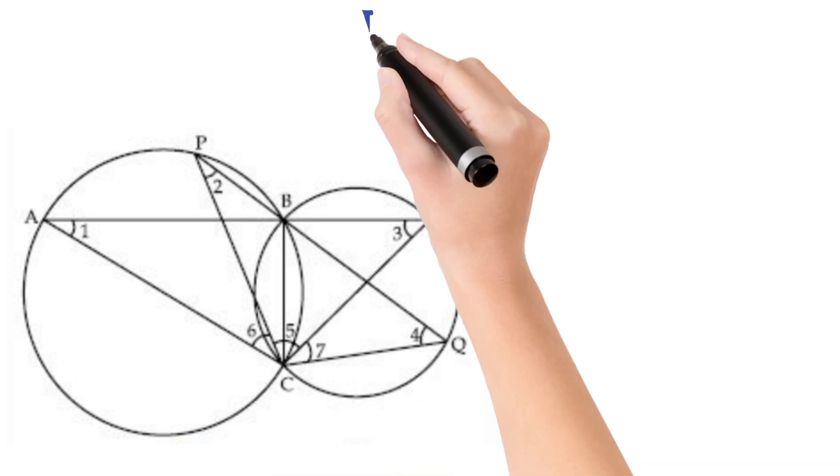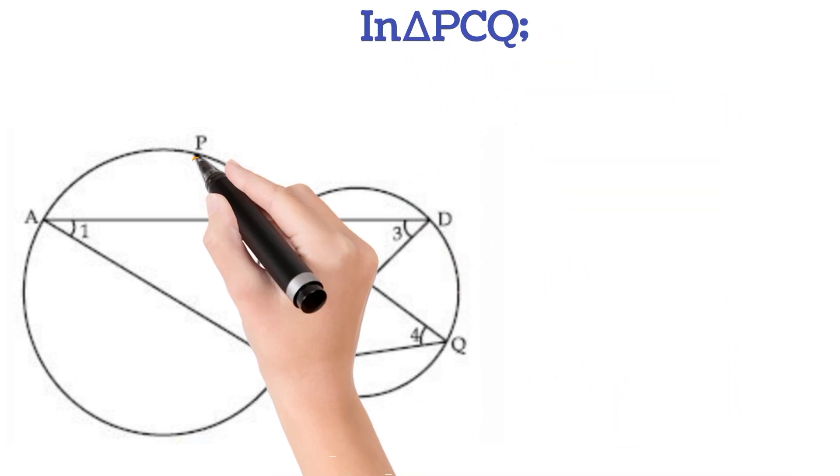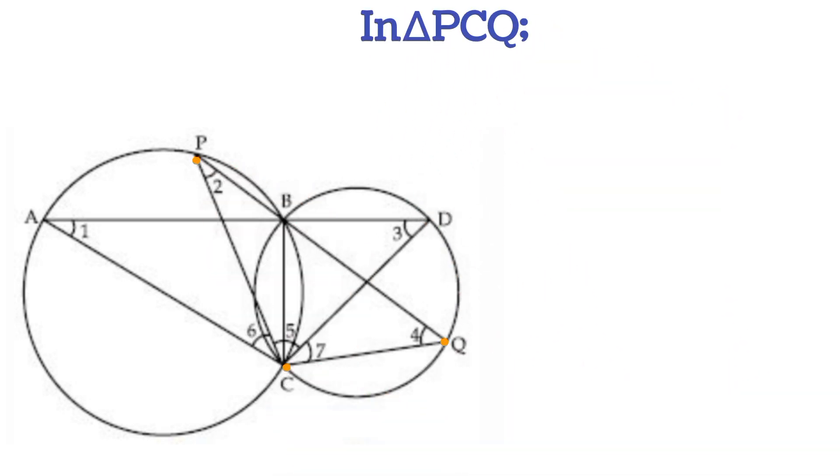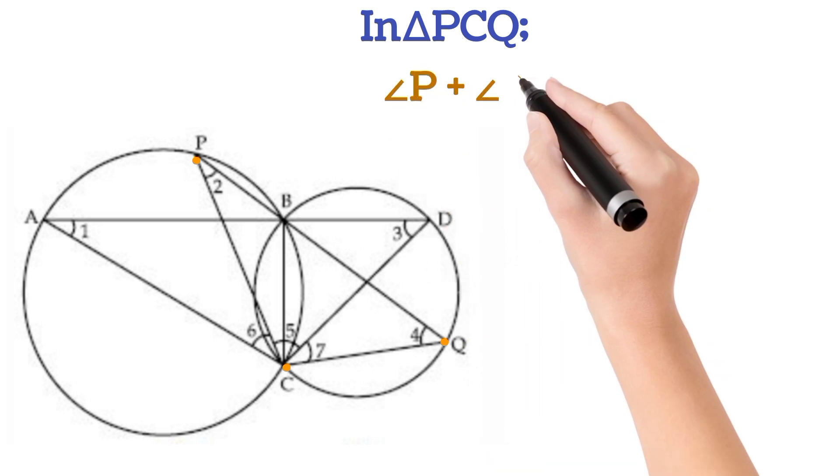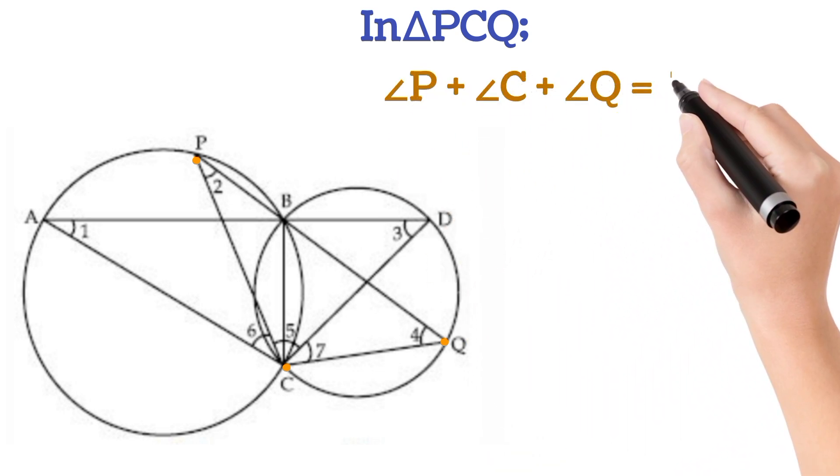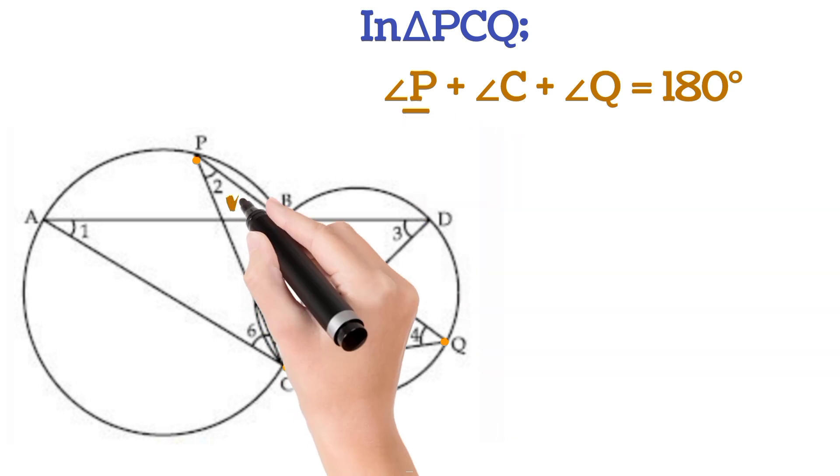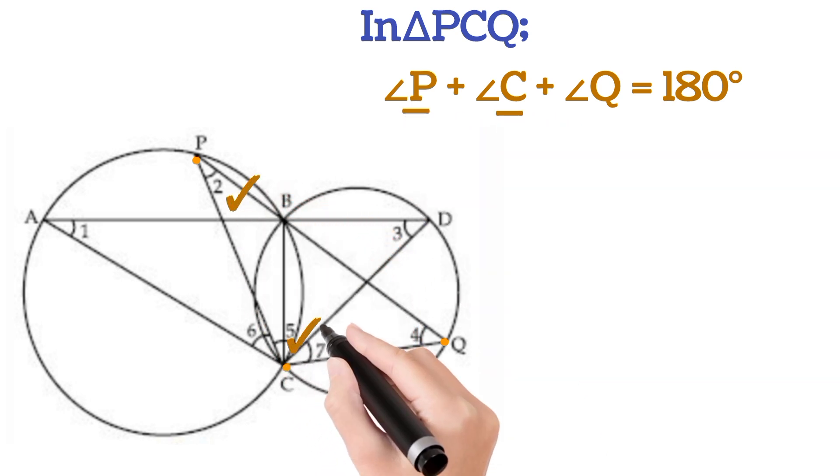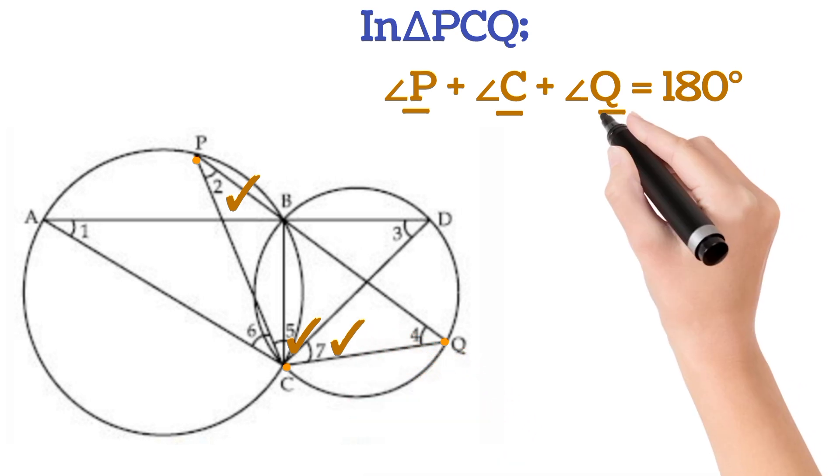In triangle PCQ, this triangle, angle P plus angle C plus angle Q will be equal to 180 degrees. P is 2, C is 5 and 7, and Q is 4.